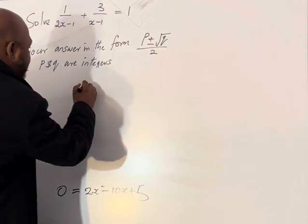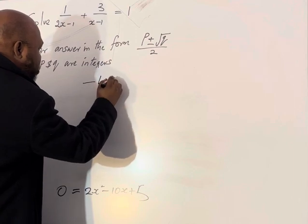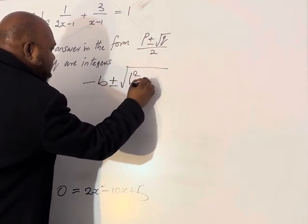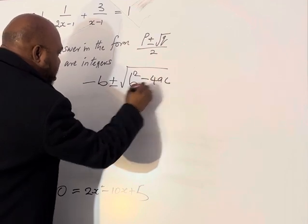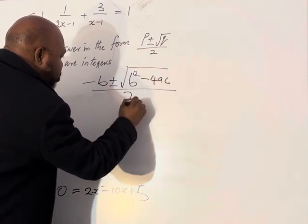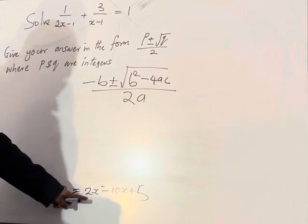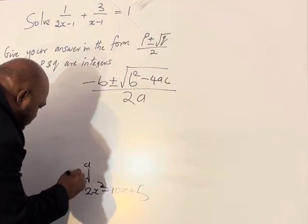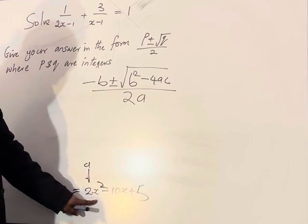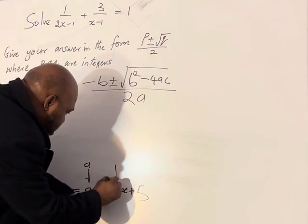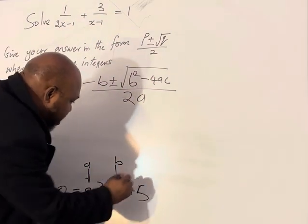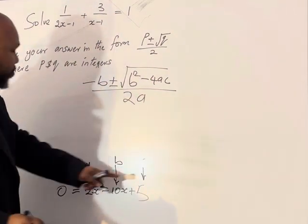The quadratic formula is -B ± √(B² - 4AC) all over 2A. Where this is squared, so 2 is A, B is minus 10, and C is 5.